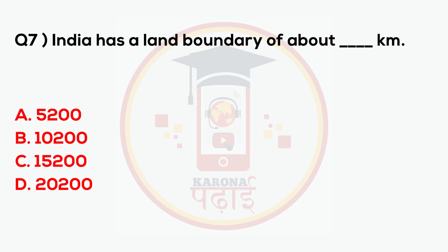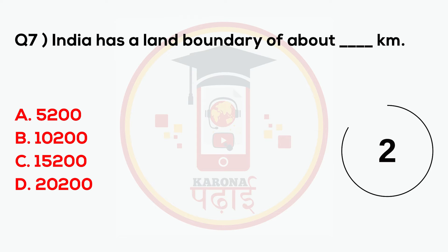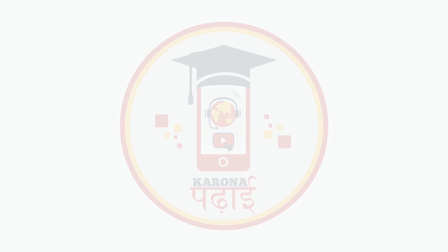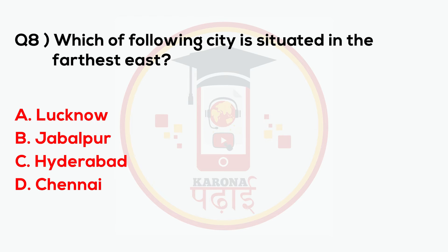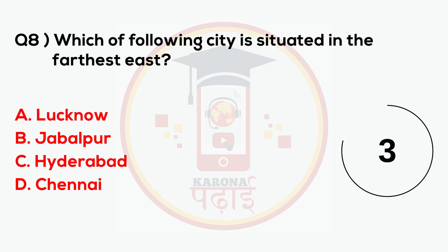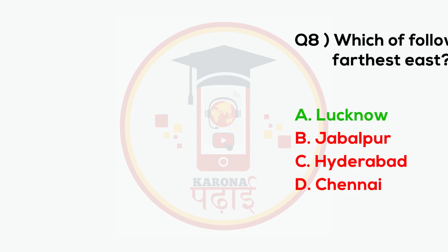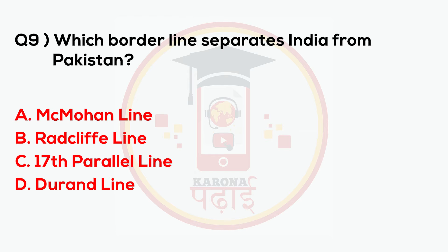India has a land boundary of about 15,200 kilometers. Which of the following cities is situated in the farthest east? The answer is Lucknow.